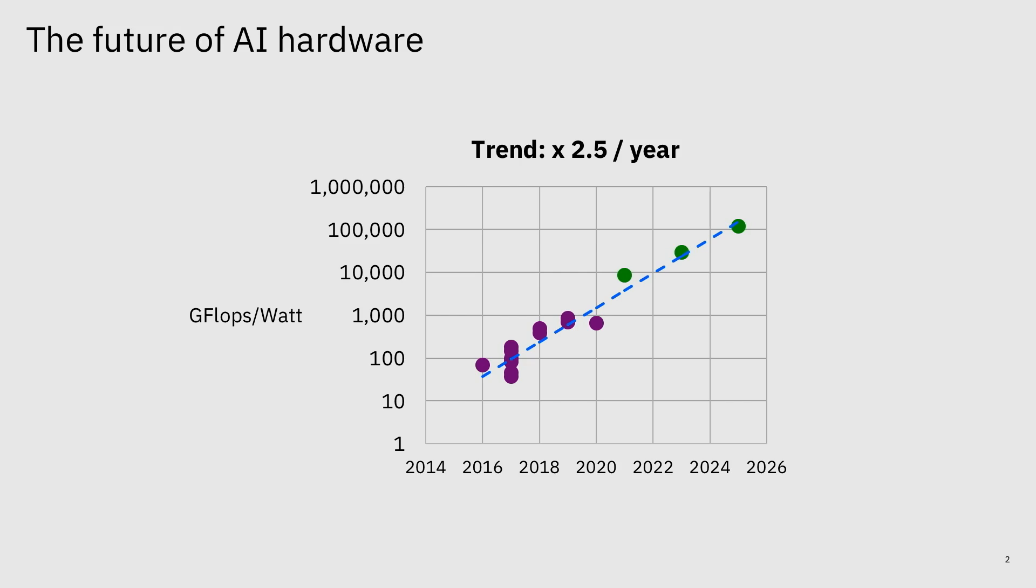It will be hard to overstate the importance that computation has had in the current advances in AI. This is a roadmap of what's likely to be in front of us. Basically, we're seeing 2.5x improvements per year in the performance of the hardware that we can utilize to train deep learning models. You're seeing this plot in two colors - the purple colors represent a GPU roadmap. What you're seeing beyond the 2020 timeframe is the space where new physics and new devices are going to be required to keep this progress, that just architectural innovations may not be enough.